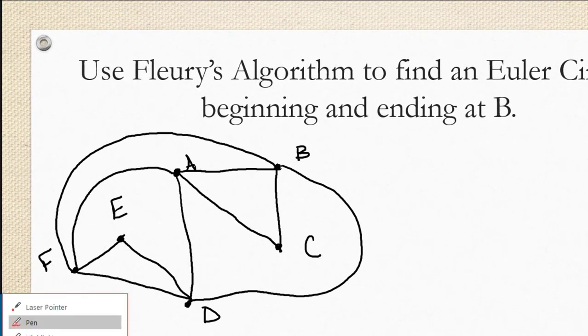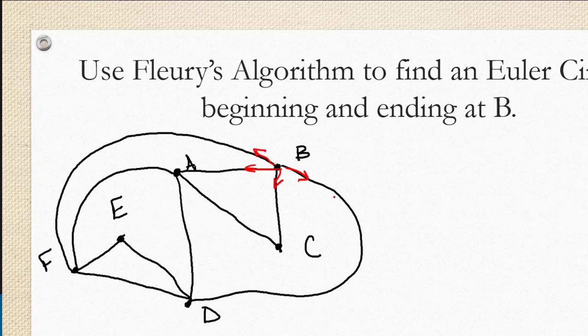We're going to use Fleury's algorithm to find an Euler circuit beginning and ending at B. So if we're beginning at B, we have several options for where we want to go first. We could go to D, we could go to C, we could go to A, or we could go to F. And none of these appears to be a cut edge such that if we removed it, it would cause a disconnected graph. So I chose to go from B to F.